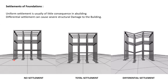In no settlement, the ground or the plot is uniform. In total settlement, the designer has cleared undulations on the site by uniforming it for construction. Differential settlement is when you have undulations on the site and you have to design the building or substructure accordingly. Uniform settlement is usually of little consequence to the building, while differential settlement can cause severe structural damage.